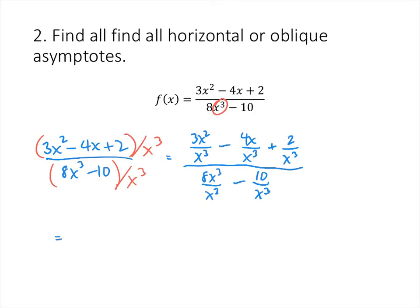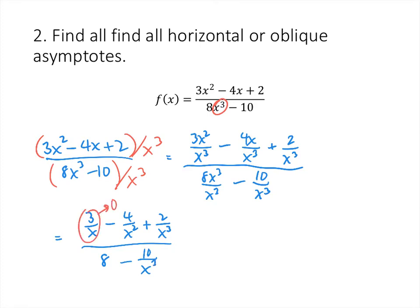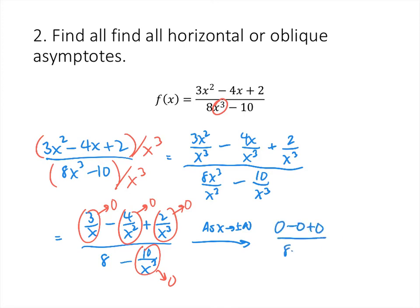When we do that and simplify, on the top we get 3 over x minus 4 over x squared plus 2 over x cubed, and on the bottom we get 8 minus 10 over x cubed. Now as x goes to infinity, each of those fractional terms goes to 0. So as x goes to plus or minus infinity, we get 0 minus 0 plus 0 divided by 8 minus 0, that's 0 over 8, which is 0. So our horizontal asymptote is y equals 0.